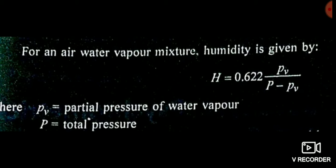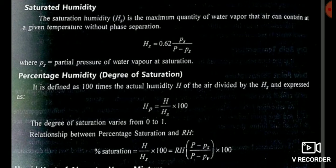The formula for humidity is: H = 0.622 × (Pv / (P − Pv)), where Pv is the partial pressure of water vapor and P is the total pressure. The constant 0.622 comes from the ratio of molecular weights: 18 divided by 28.97 equals 0.622. You must remember this formula as it is very useful for solving problems.